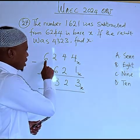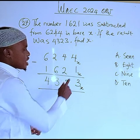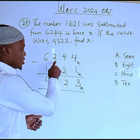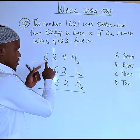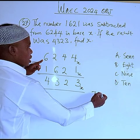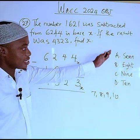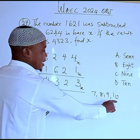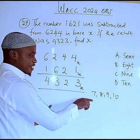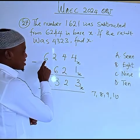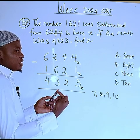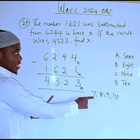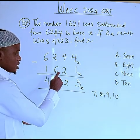Looking at the numbers 6244 and 1621, to determine the range of possible bases, look at the digits. The highest digit here is 6, so the base must be greater than 6. The possible values are 7, 8, 9, and 10 — which matches the options given. We cannot use base 5 or 6 because 6 cannot be a valid digit in those bases.